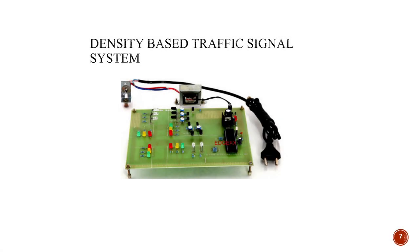For the normal traffic light control system, there are some drawbacks. In a four-way junction road, one side may have less traffic and another side may have more traffic, but the time allotted for all roads is the same. This can be a drawback for that particular side. To address this, we can propose a density-based traffic signal system.